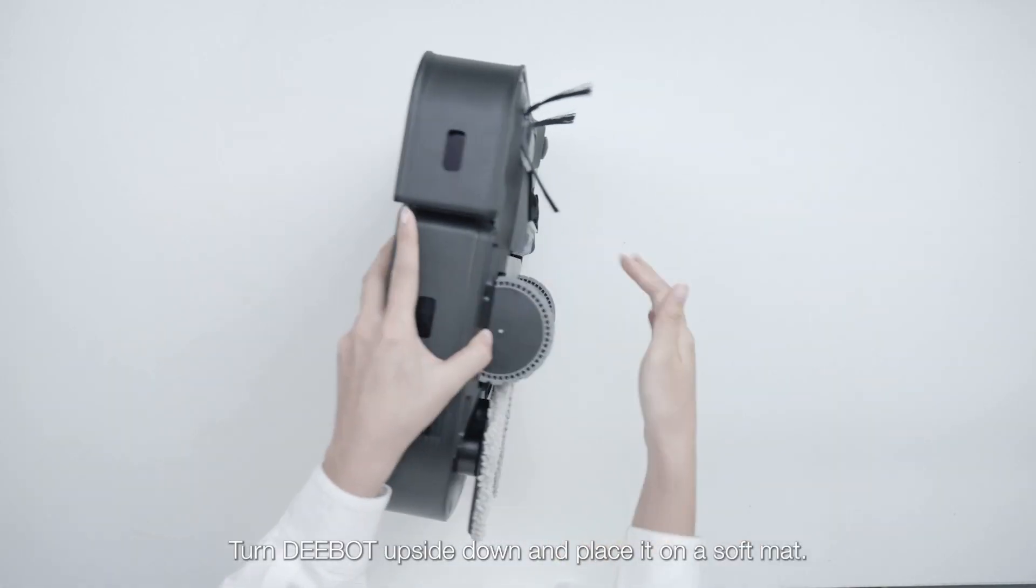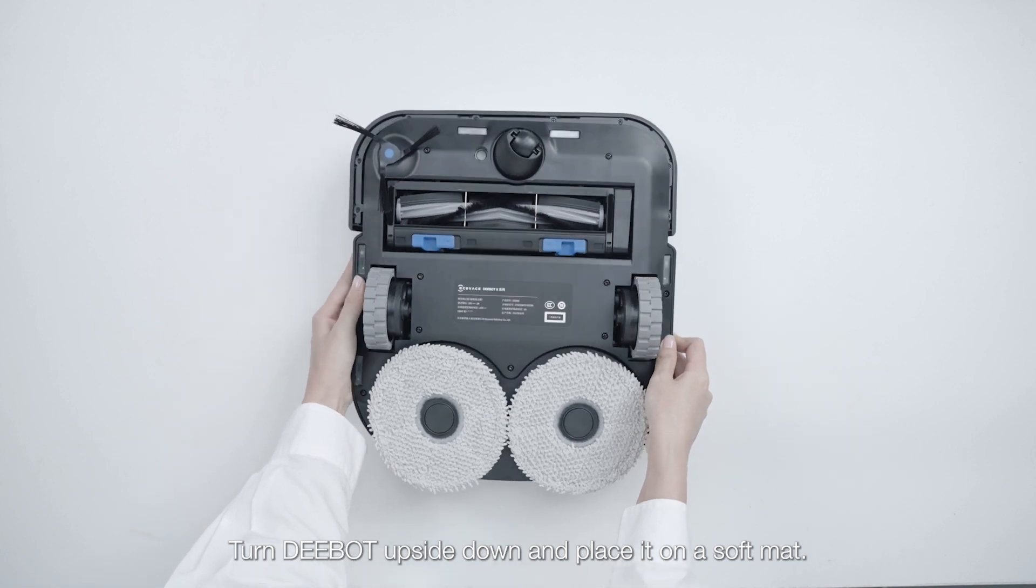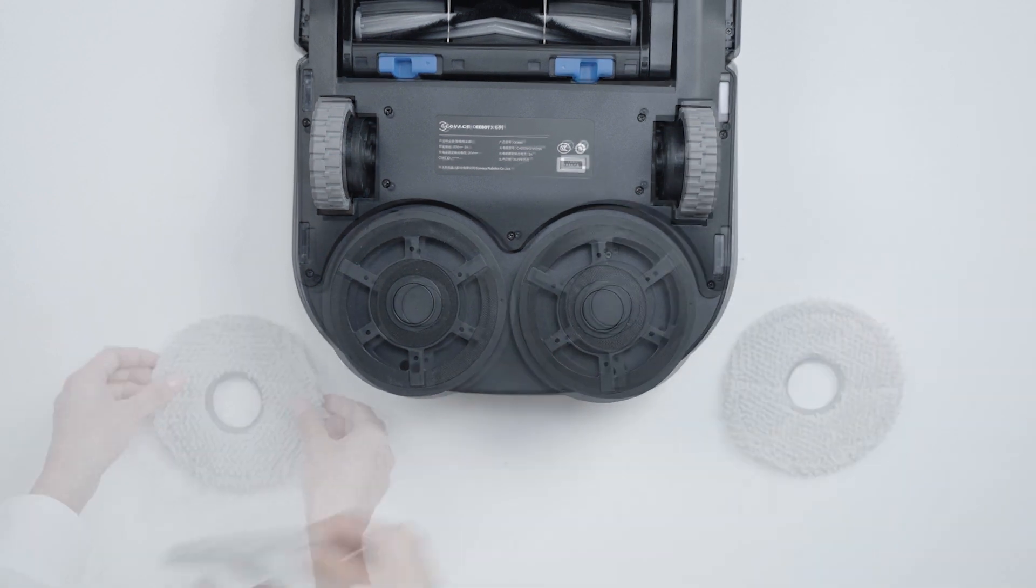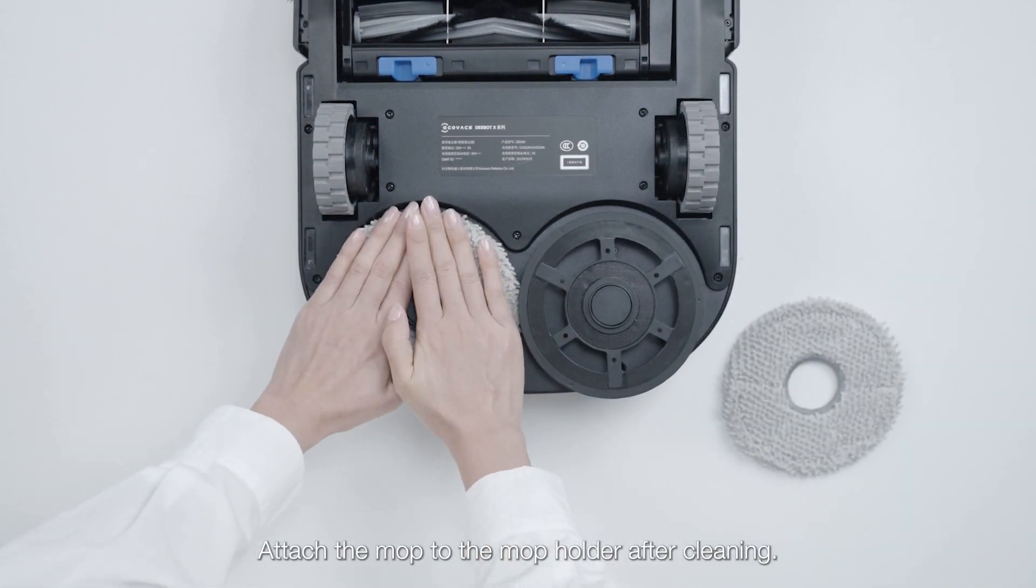Turn D-Bot upside down and place it on a soft mat. Take off the mop. Attach the mop to the mop holder.